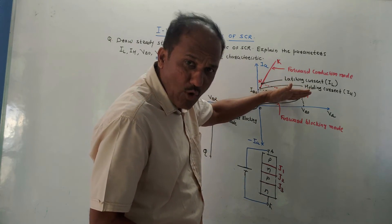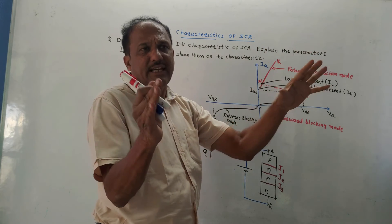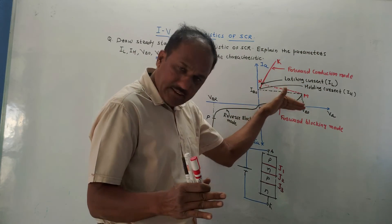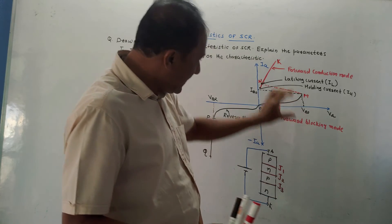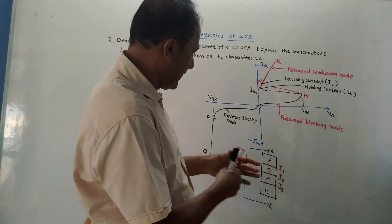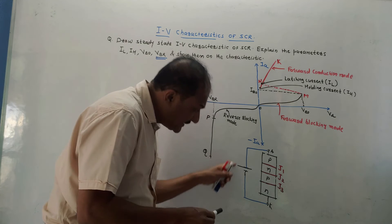So even if it is in the forward mode, basically SCR is acting as a switch. Even if it is in the forward mode, due to small leakage current, this switch acts as an open circuit. Once you will increase this voltage, then in that case this point M, once gets shifted up to point N.